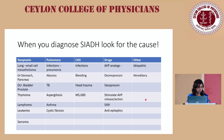Once SIADH is diagnosed, look for the underlying cause. Neoplastic conditions include lung, GI malignancies, thymomas, lymphomas, and leukemias. Pulmonary infections such as TB and aspergillosis can cause SIADH. Central nervous system causes include infections, bleeds, head trauma, and Guillain-Barré syndrome. There are also drug-related, idiopathic, and hereditary causes of SIADH.